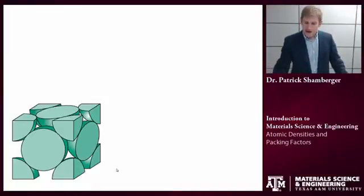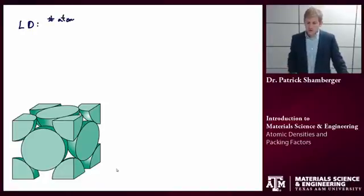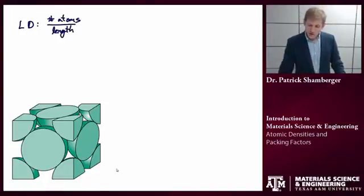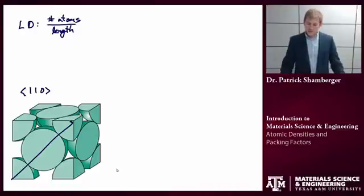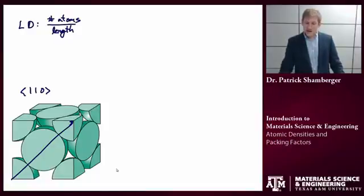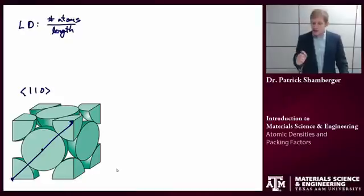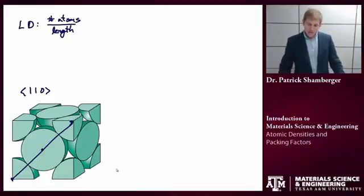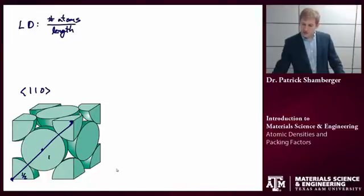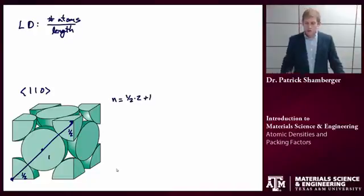A linear density is defined as the number of atoms per unit length. Say I'm interested in a [1,1,0] family of directions. One example would be this particular direction. I first need to know how many atoms this direction passes through. This is a little tricky because I start in one atom, pass through a second, and get to a third, but I need to take into account how much of each atom I pass through. Since I'm starting exactly in the middle, I'm only going through half of this atom, all of this atom, and then half of this atom. So n equals one-half times 2 plus 1, which equals 2 atoms.